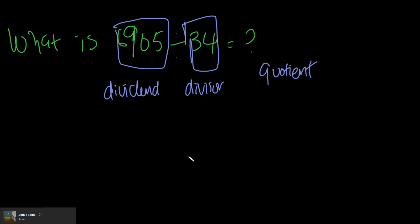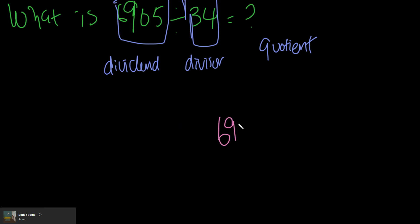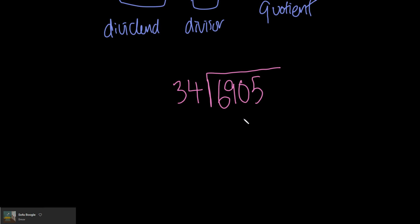To do long division, the dividend goes into this bracket here. 6905 goes into this bracket, and we have 34 as our divisor here. Now we have to figure out how to divide this. To figure out division, we actually have to do multiplication as well. So we take these first two numbers, we have 69 here, we have 34.